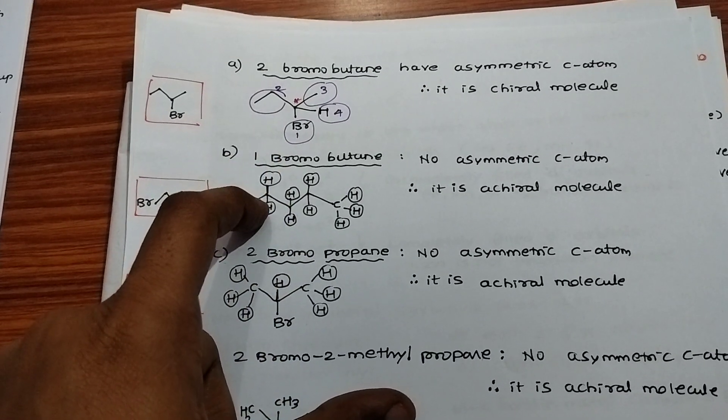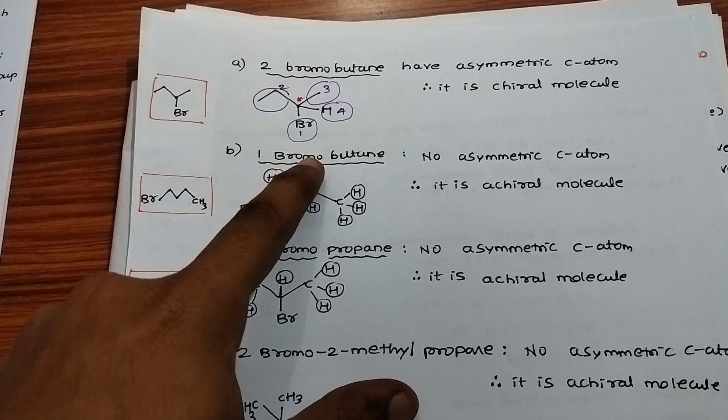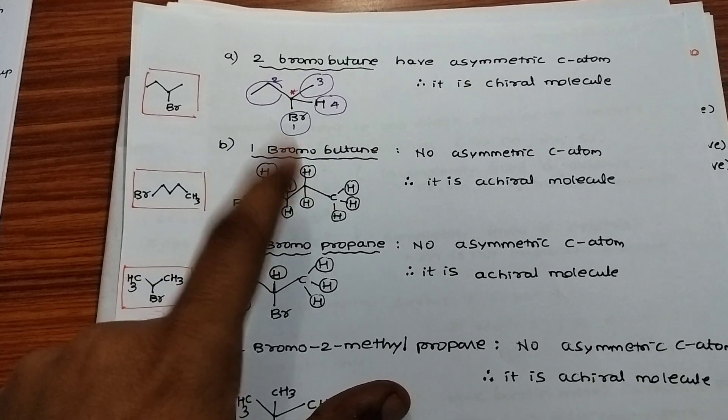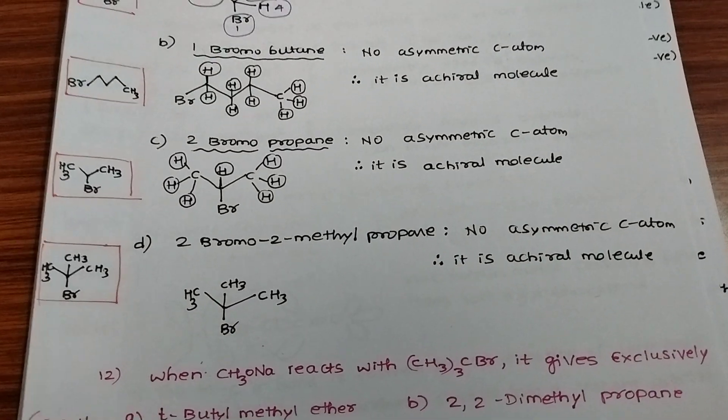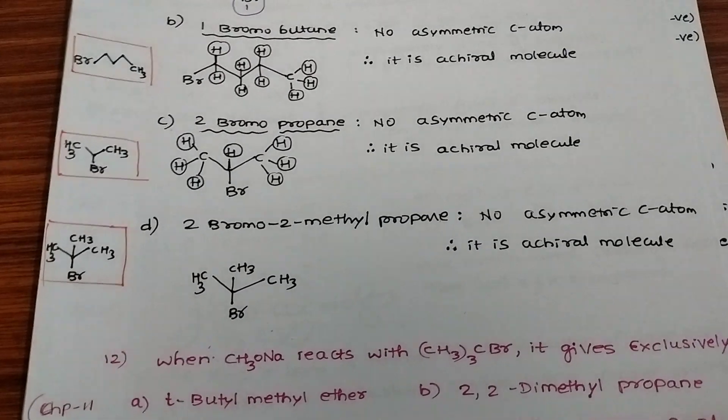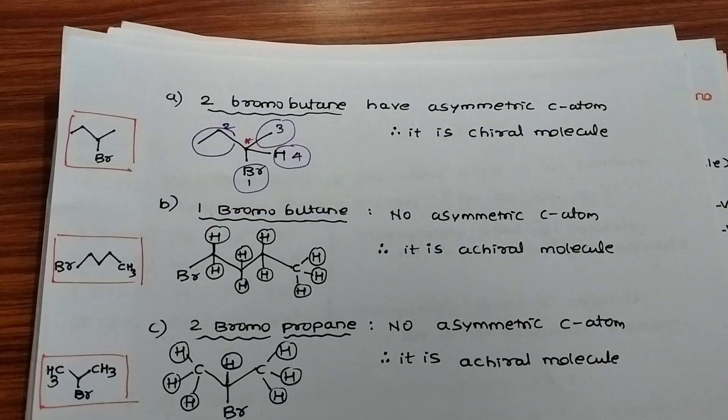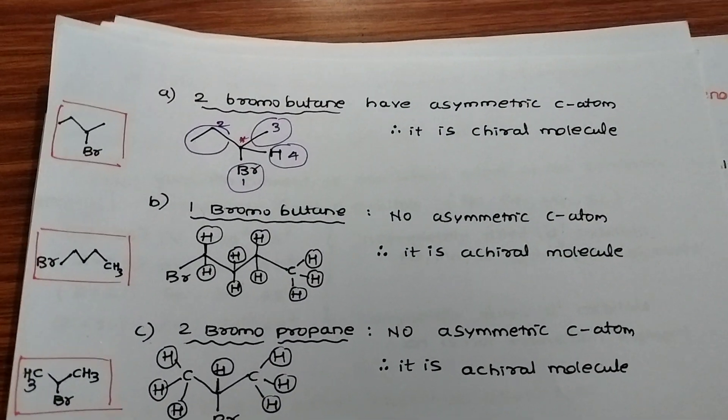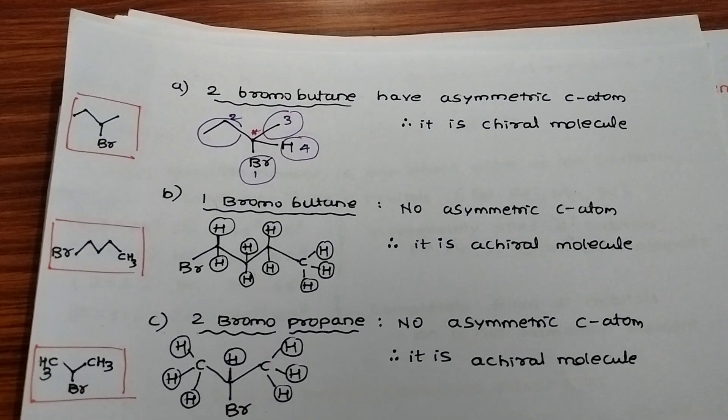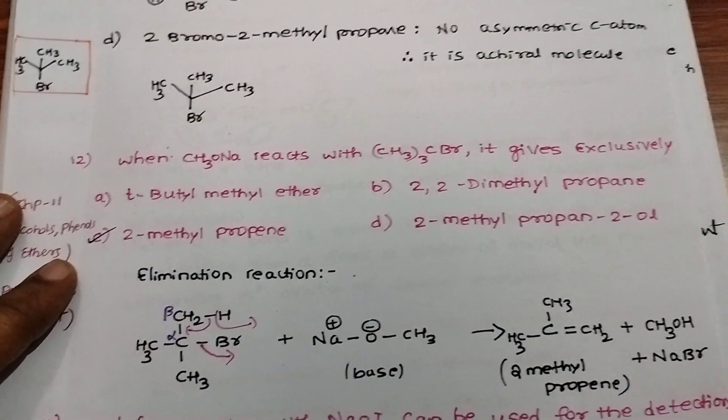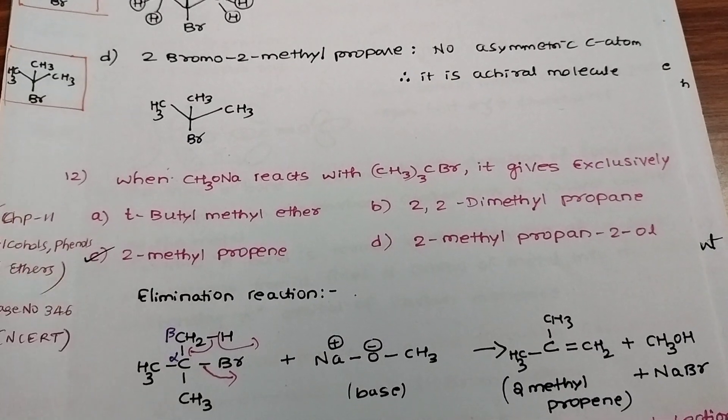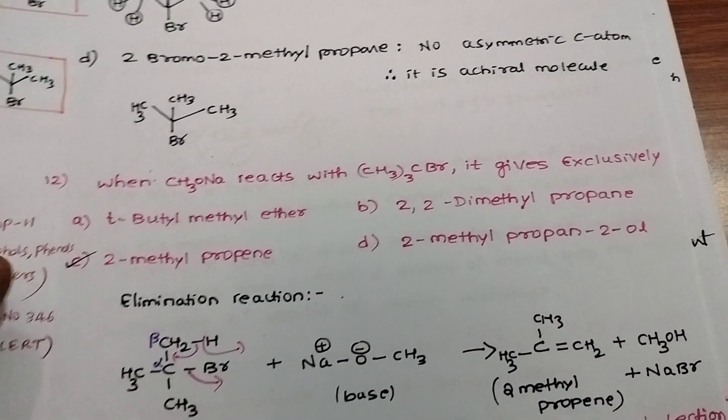This carbon is bonded to the same groups. Option B and C don't have asymmetric carbon atoms, therefore they are achiral. But the first option is a chiral molecule because it has an asymmetric carbon atom. Next: when sodium methoxide reacts with?